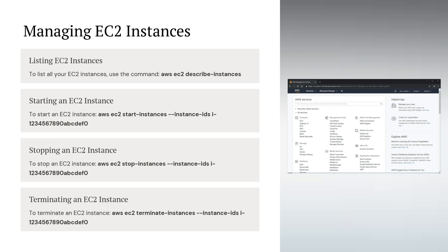Managing EC2 instances: to list all your EC2 instances, use 'aws ec2 describe-instances'. To start an EC2 instance, use 'aws ec2 start-instances' followed by the instance IDs. To stop an EC2 instance, use 'aws ec2 stop-instances' followed by the instance IDs. To terminate an EC2 instance, use 'aws ec2 terminate-instances' followed by the instance IDs.